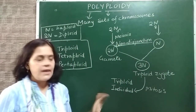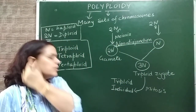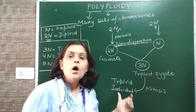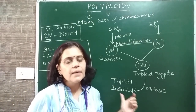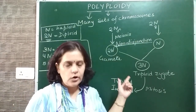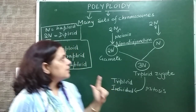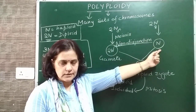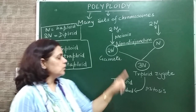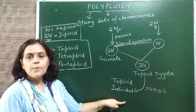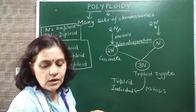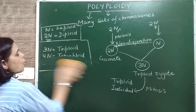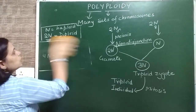So a triploid individual, a polyploid individual, has been formed. The reason behind this polyploid individual being formed is non-disjunction. And as you can see, here both individuals belong to the same species - so this polyploid individual is called an autopolyploid.